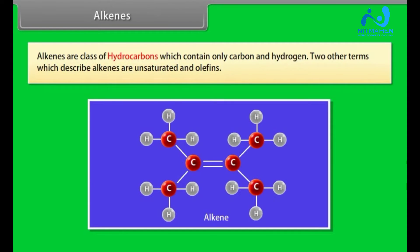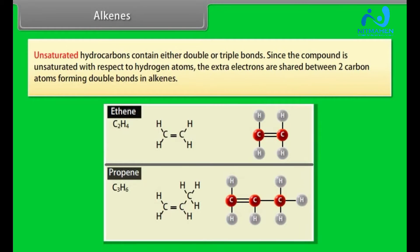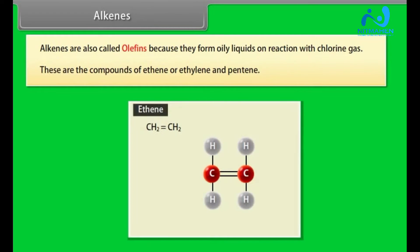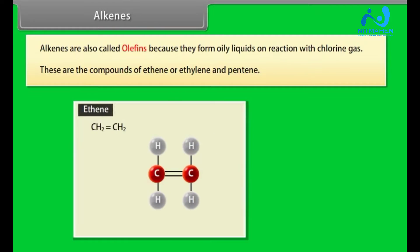Alkenes are class of hydrocarbons which contain only carbon and hydrogen. Two other terms which describe alkenes are unsaturated and olefins. Unsaturated hydrocarbons contain either double or triple bonds. Since the compound is unsaturated with respect to hydrogen atoms, the extra electrons are shared between two carbon atoms forming double bonds in alkenes. Alkenes are also called olefins because they form oily liquids on reaction with chlorine gas.